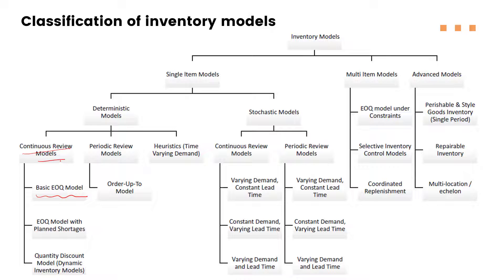As we discussed in the last video, continuous review means we are continuously checking the level of a particular product when it reaches a certain level, and then we are going to reorder it. EOQ is under the continuous review model, and the demand of that single product must be deterministic — meaning the demand is constant over time.